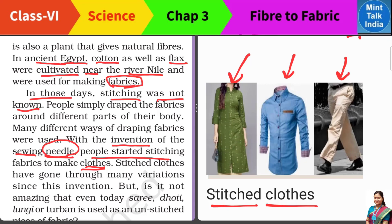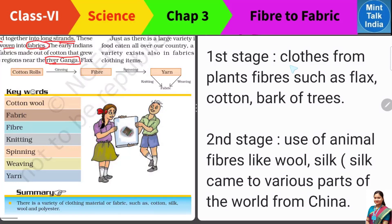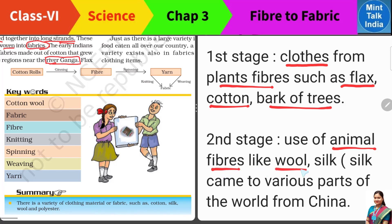तो अगर हम clothing material के development की history को तीन stages में divide करें — the three stages in the history of the development of clothing material — first stage is when the people started to wear clothes from the plant fibers, such as the flax fiber, cotton fiber, and bark of the trees. Second stage में लोगों को animal fibers के बारे में भी पता चला — animal fibers हमें गर्मी देते हैं, strong होते हैं, like the wool and the silk. Here you must know that silk is invented in China, and from China only, silk came to various parts of the world.